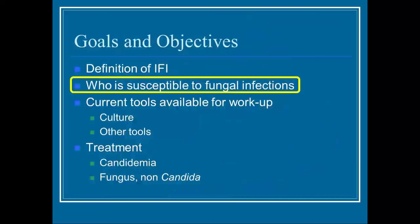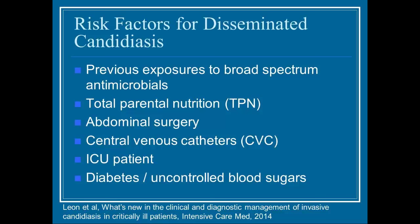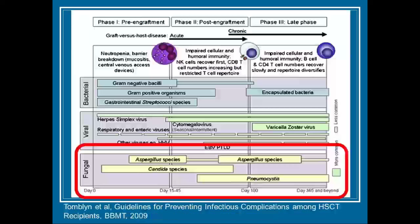Now that we've covered the definition of IFI, diagnosis, and drugs — who is susceptible? Risk factors for disseminated candidiasis include exposure to broad-spectrum antimicrobials that knock out good flora in the GI tract, being on total parenteral nutrition, having received abdominal surgery, having a CVC in place, being an ICU patient, and having diabetes or uncontrolled blood sugars.